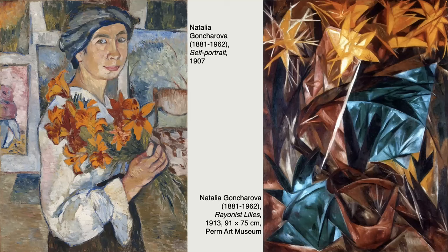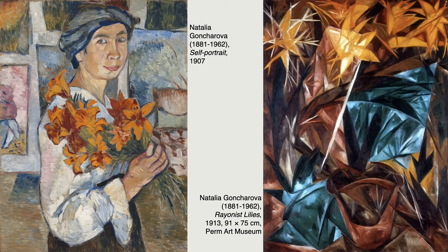Moving on to more modern art: Natalia Goncharova was one of the most important early avant-garde artists. She founded a group called Jack of Diamonds, which became one of the most influential groups of avant-garde artists in Russia between about 1910 and 1917. Their first exhibition in 1910 invited French Cubists to exhibit; Vasily Kandinsky also exhibited, living in Germany at the time. Goncharova and her artists were influenced by Cézanne, Matisse, as well as Russian artists like Kazimir Malevich. She was also a member of the Blue Rider group.